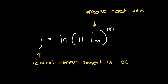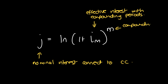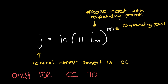With compounding periods — such as daily, monthly, or quarterly — M is your compounding period. A big reminder: this formula is only for the equivalent effective interest rate with continuous compounding — that is, the normal interest rate for continuous compounding that is equivalent to a given compounding-period rate.